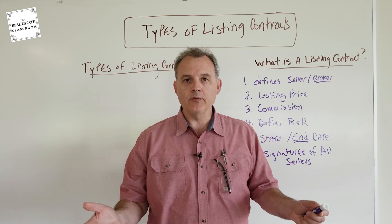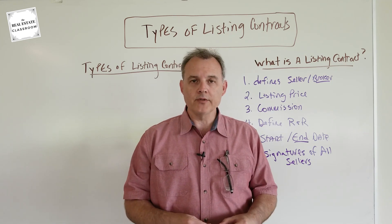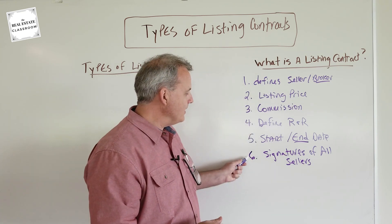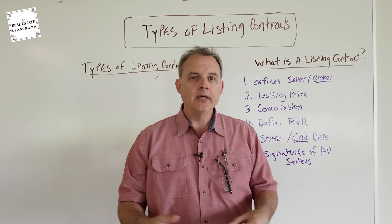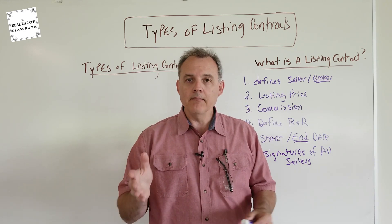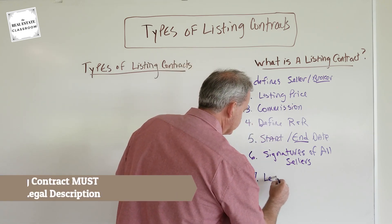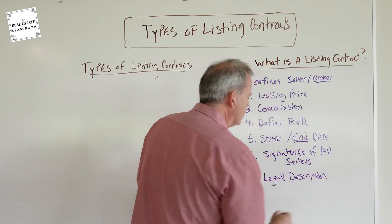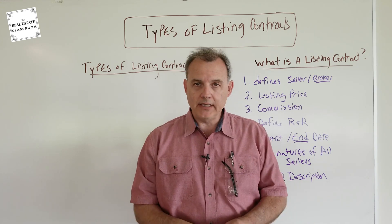It's very common in an LLC — a limited liability company — where there might be five or six principals but only one has signature authority. If nothing is established in the articles of incorporation, bylaws, or operating agreement, then all of the principals for that entity must sign the listing contract. The last required element is the legal description — the legal address where the property's location is legally described.